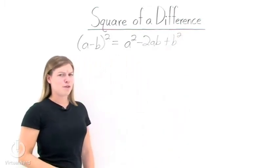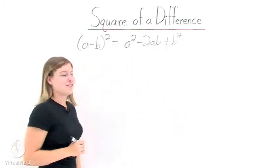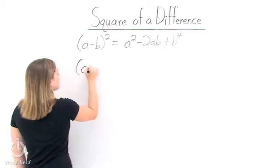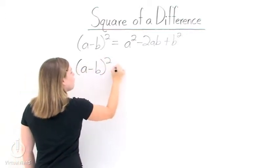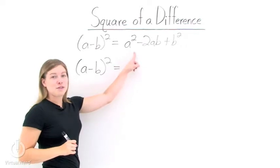But how do we know that this formula is correct? Well, let's prove that it's correct. Let's take the left-hand side, a minus b squared, FOIL it out, and show that it equals this right-hand side.